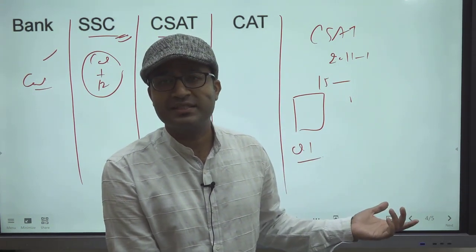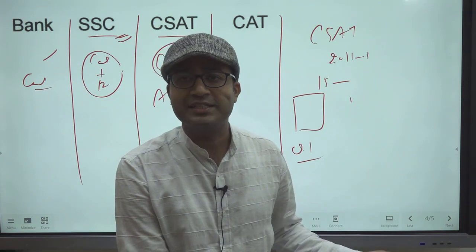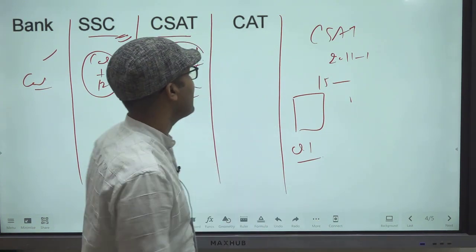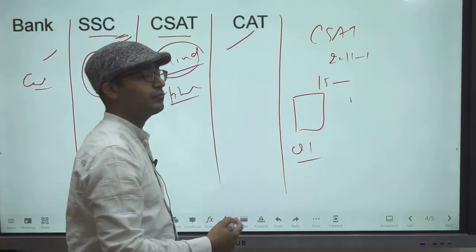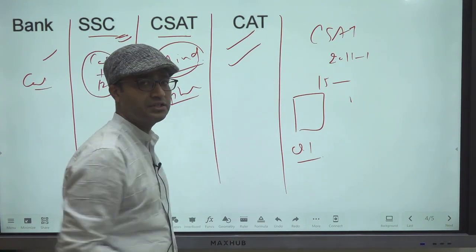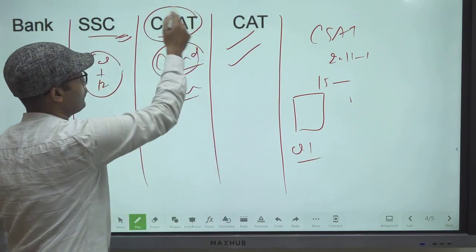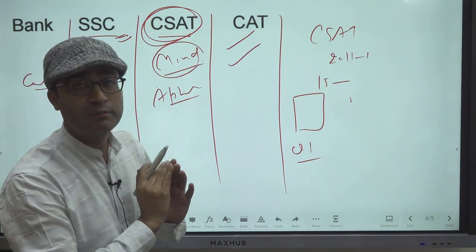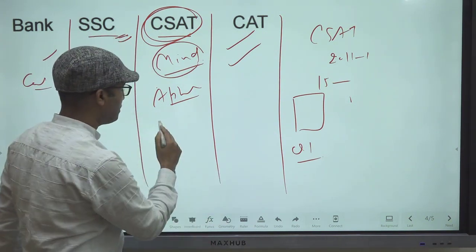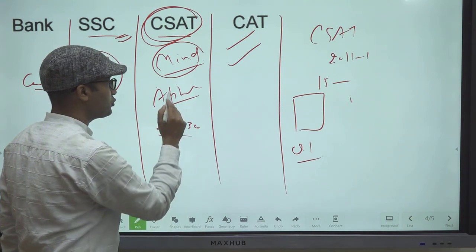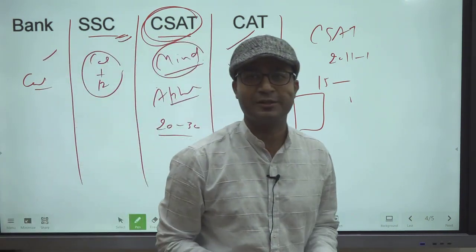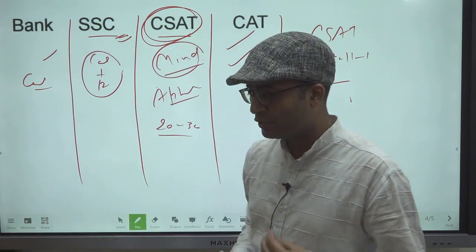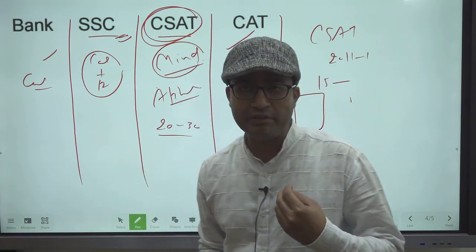But you need 67 plus. There are questions where you can easily manage 67 plus. CAT is a different game where people who are very good in English and Math are required. But here our focus is CSAT - application-based questions. No need to mug up too many formulas. Around 20 to 30 formulas are more than enough, but you have to apply your mind. That's the main thing for CSAT paper.